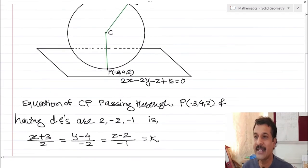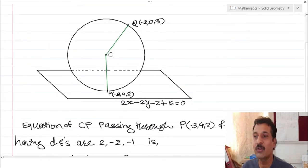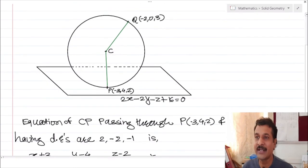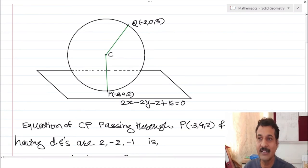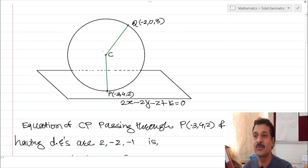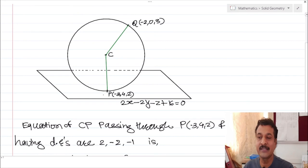We have C in the form of k, and by one more condition we can find k. By the figure, observe that CQ is the radius of the sphere and CP is also the radius of the sphere, and that is why CP equals CQ.